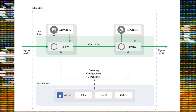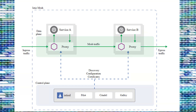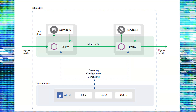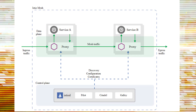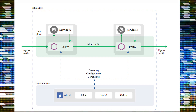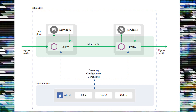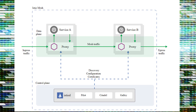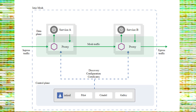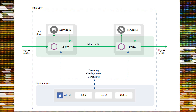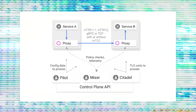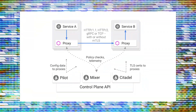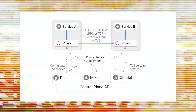Let's dive deep into the architecture. The data plane consists of Envoy proxies. Istio primarily uses Envoy proxies as sidecar containers alongside its microservices. These proxies intercept and control all incoming and outgoing traffic.